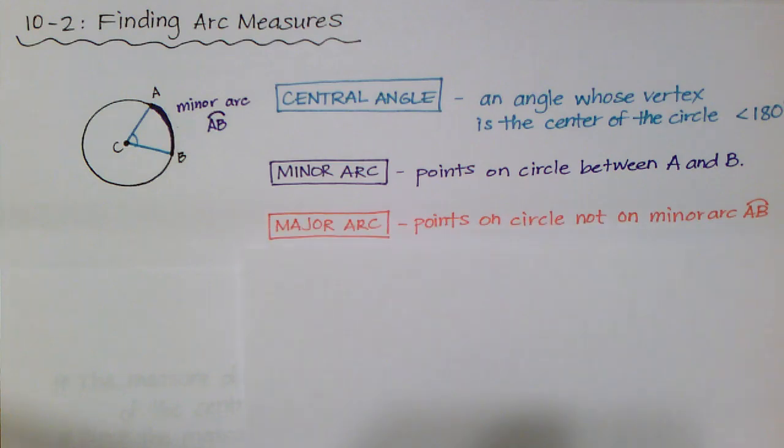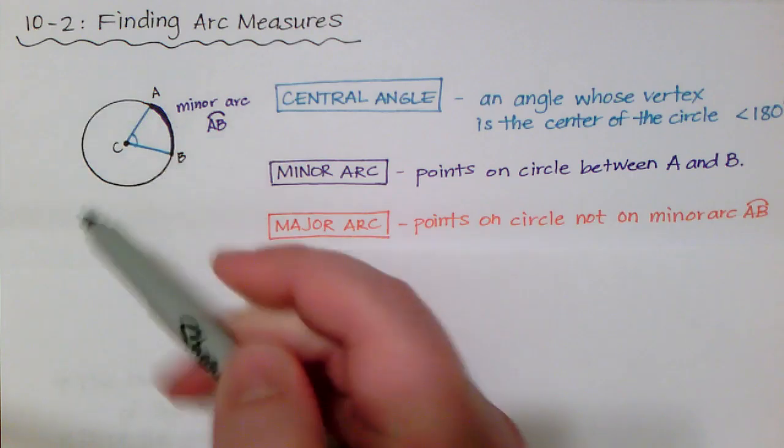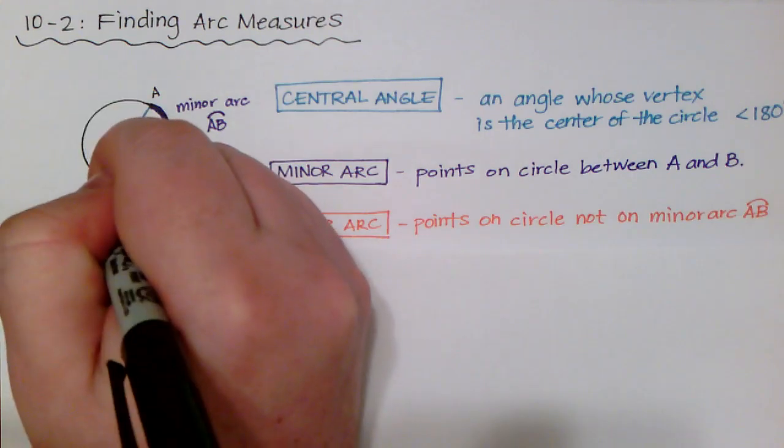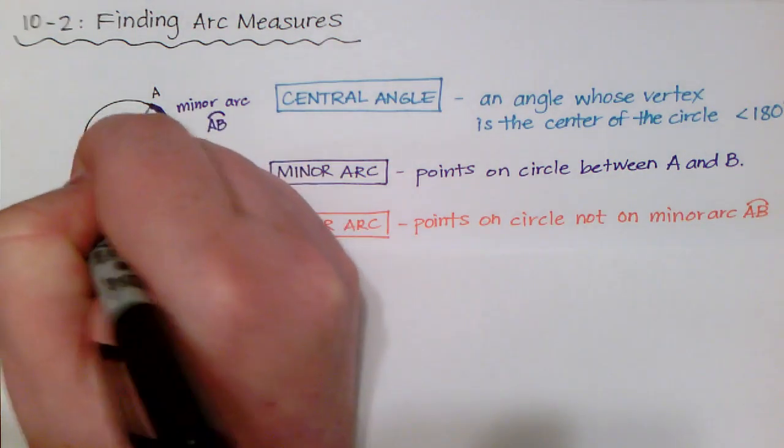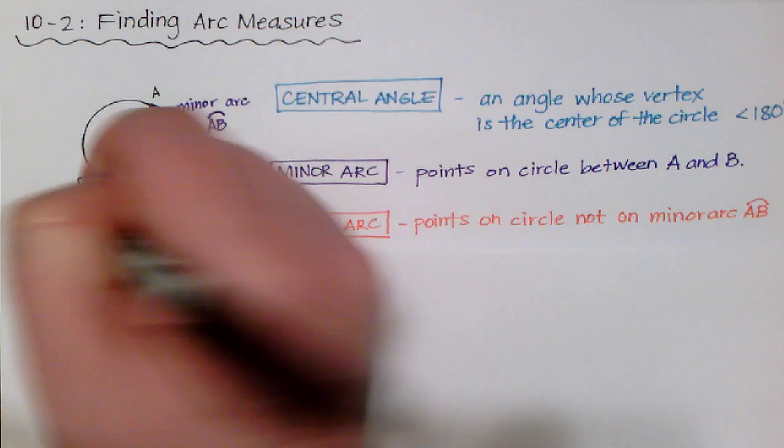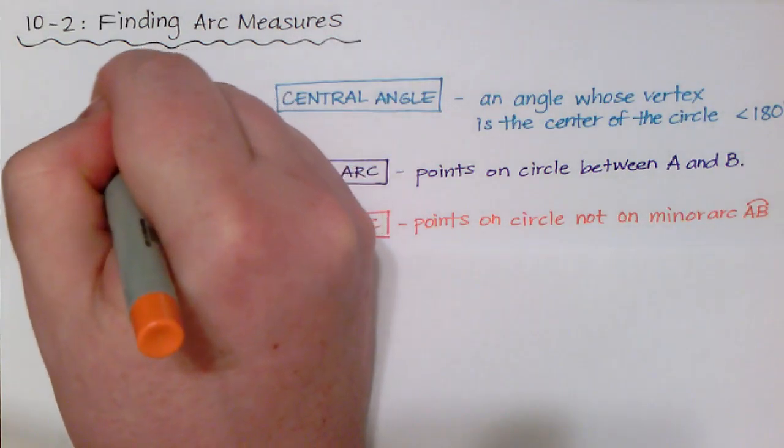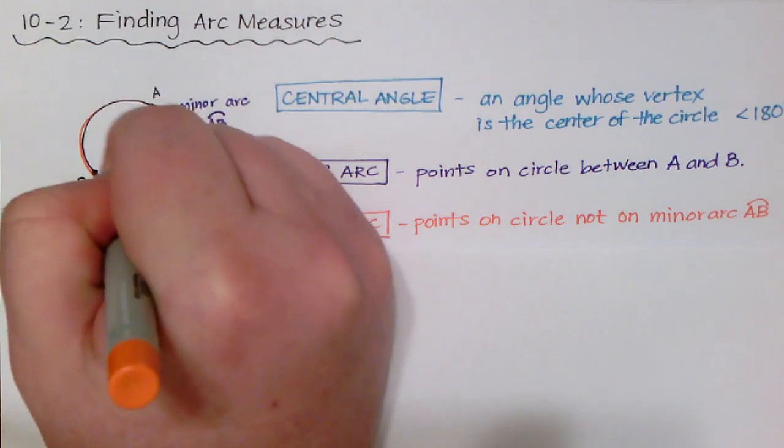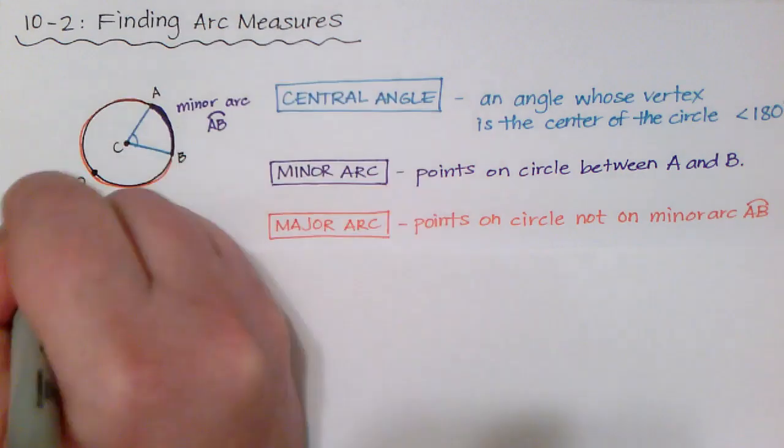The next part is called the major arc. And these are the points on the circle, not on the minor arc A, B. So, instead of being this purple region, it's going to be the rest of the arc around the circle, unless you have other points. But, the way that we're going to label this is by adding another point. We'll call that D. So, this orange arc is the major arc. It's much bigger than the minor arc.